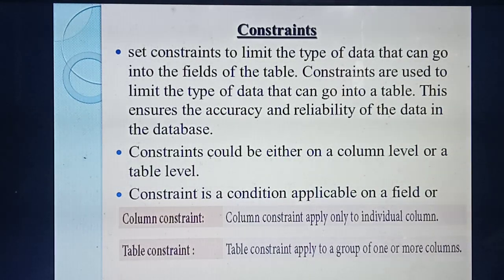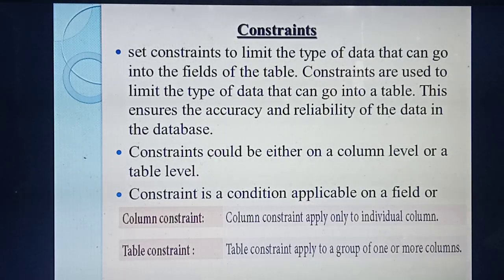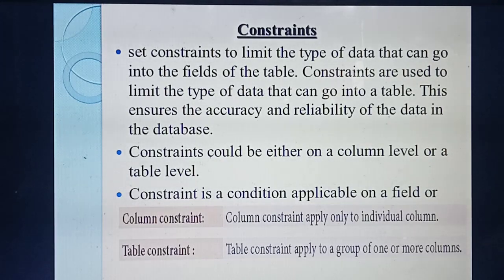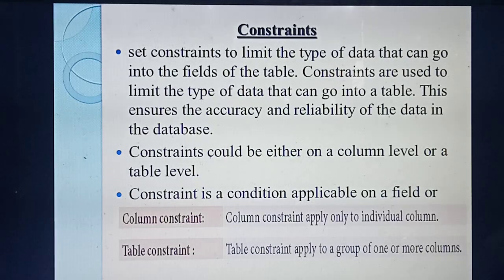What do you mean by constraints? You need to set some conditions for some columns — this column becomes important. For example, if you are applying any online application forms, entering your Aadhaar card number is important, entering your age and date of birth is important. Those fields are marked with a red color symbol. Likewise, constraints are used to set conditions for each field. Using constraints you can ensure accuracy for the database.